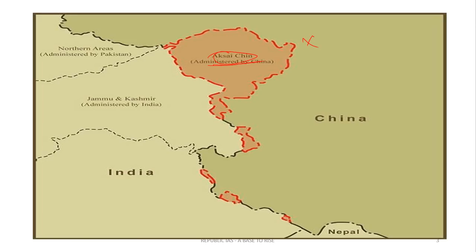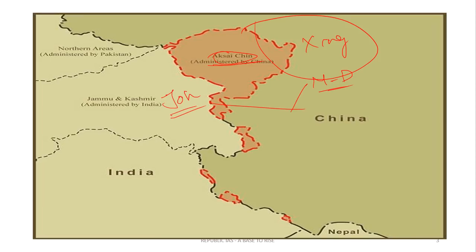Xinjiang province happens to be a place which is part of Tibet or China. India claims that we should follow the Johnson line, while China says we have to follow the McDonald line. This dispute led to the Indo-China war of 1962, and the outcome is the Line of Actual Control, which is right now the boundary between Jammu and Kashmir and Aksai Chin.